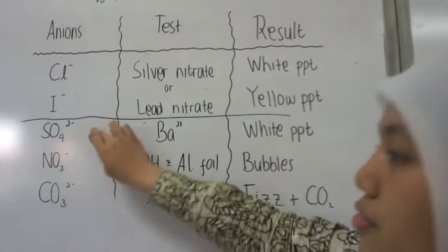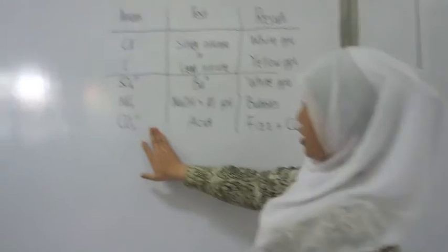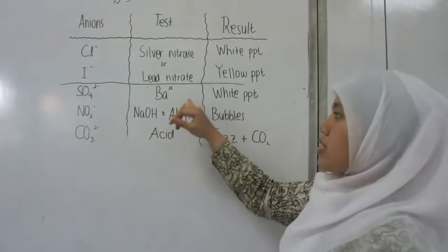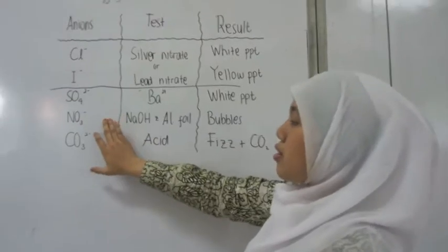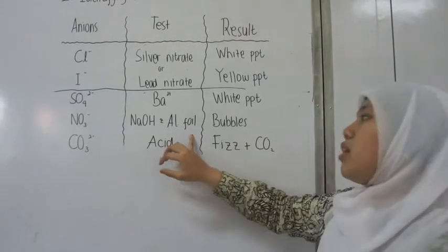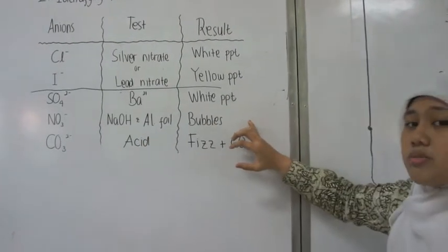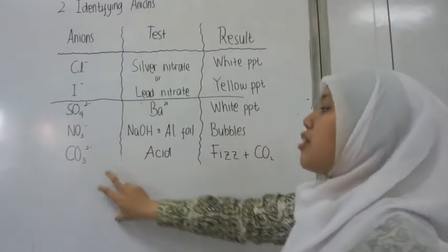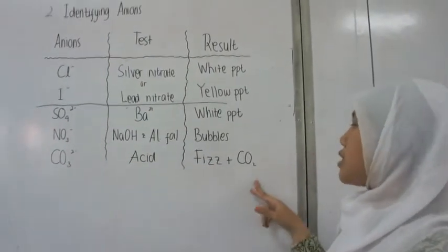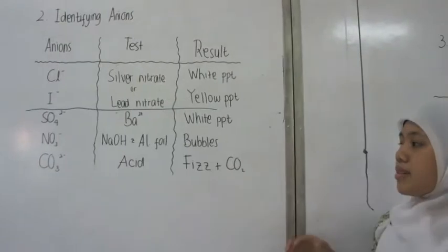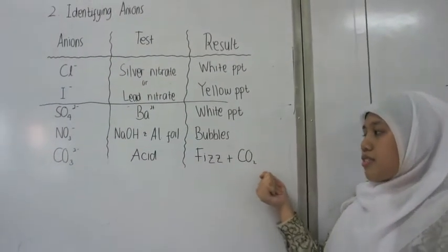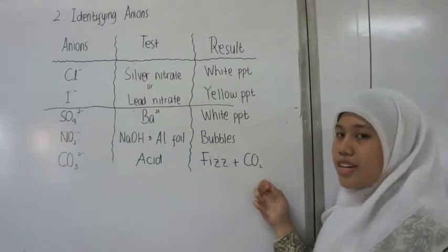Now, for the sulfate, nitrate, and carbonate, the reagent is also different. For sulfate, you can test with barium. For nitrate, you can test with sodium hydroxide and aluminum foil, and it will form bubbles, which indicates ammonia is produced. And for carbonate, you can test with any acid, and it will form effervescence and give off carbon dioxide gas.